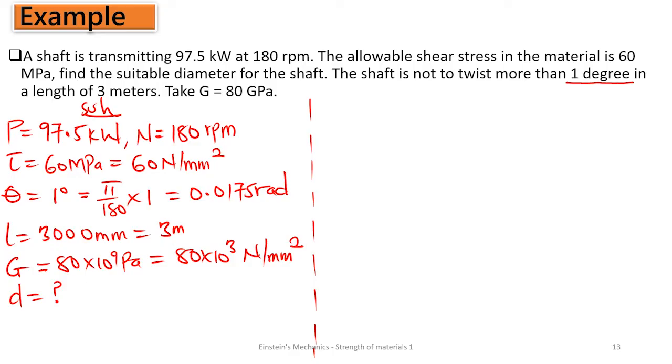Since we have power and number of rotations, and we know that P equals 2πNT over 60, we can calculate for the torque from this expression.